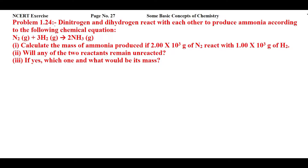Students, this is NCERT exercise problem 1.24 from page number 27 of 'Some Basic Concepts of Chemistry.' Dinitrogen and dihydrogen react with each other to produce ammonia according to the chemical equation N₂ + 3H₂ → 2NH₃. There are three parts: calculate the mass of ammonia produced if 2.00×10³ g of N₂ reacts with 1.00×10³ g of H₂; will any reactant remain unreacted; and if yes, which one and what would be its mass?